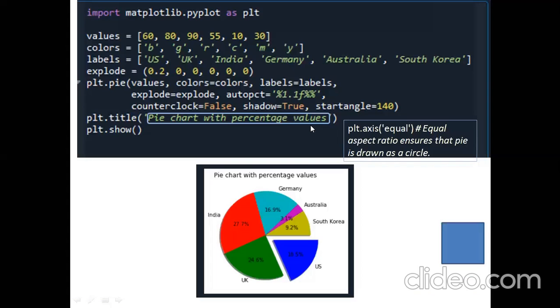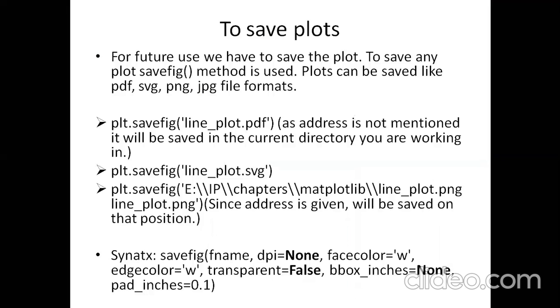While Python restarts, let's cover saving plots from the remaining slides. The startangle attribute — if startangle equals to 140, your first value will start plotting from 140 degrees. The first data element (US) will get printed starting from that angle. You can try it in your own systems since the IDE is not currently working.